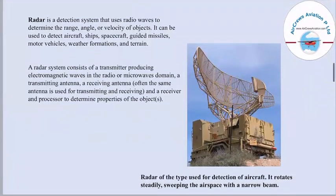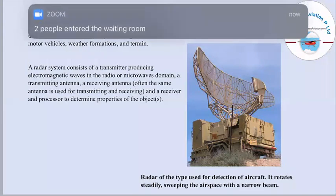Radar is a detection system that uses radio waves to determine the range, angle, or velocity of objects. It can be used to detect aircraft, ships, spacecraft, guided missiles, motor vehicles, weather information, as well as terrain. A radar system consists of a transmitter producing electromagnetic waves in the radio or microwave domain, a transmitting antenna, a receiving antenna — which is often the same antenna used for both transmitting and receiving — and a receiver and processor to determine the properties of the object. The type of radar shown in this picture is used for detection of aircraft and is usually located at airports, where it rotates steadily sweeping the airspace with a narrow beam.